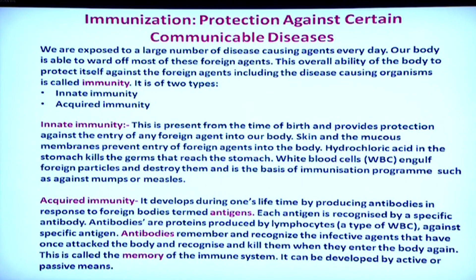Innate immunity protects our body through several mechanisms: skin and mucous membranes prevent entry of foreign agents into the body; hydrochloric acid in the stomach kills germs that reach it along with food; and white blood cells engulf foreign particles and destroy them. This forms the basis of immunization programs against mumps, measles, and polio. Acquired immunity, on the other hand, develops during one's own lifetime by producing antibodies in response to foreign bodies — called antigens.